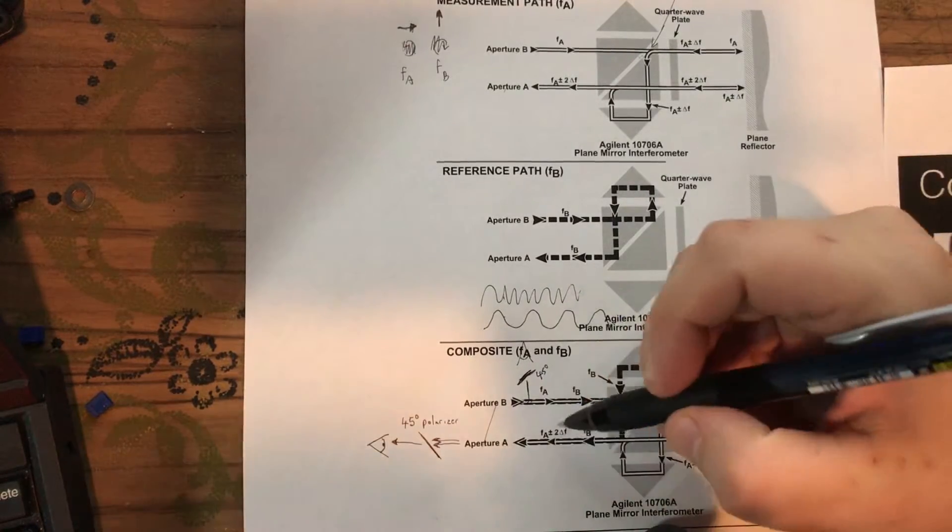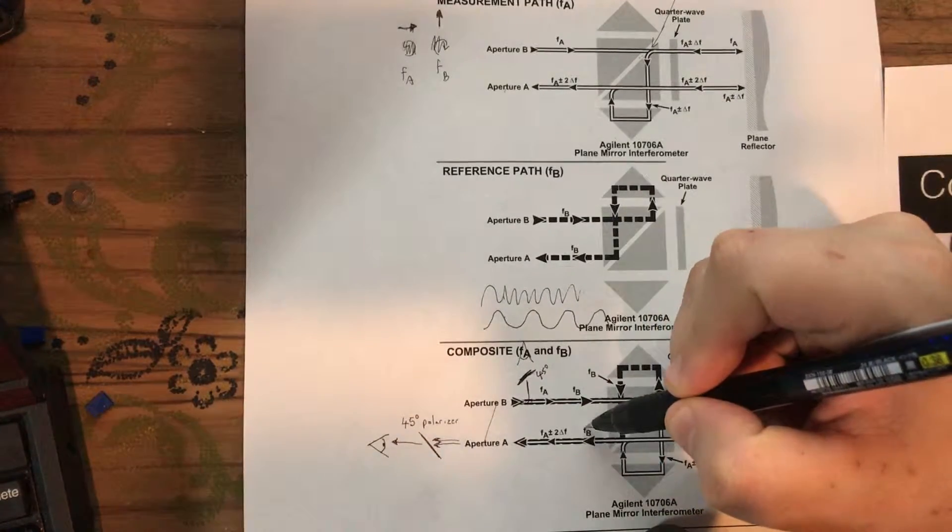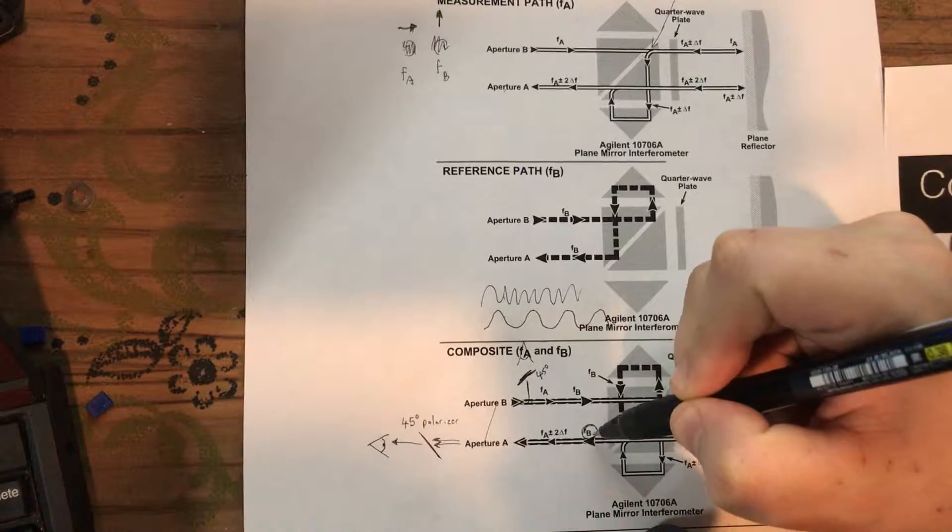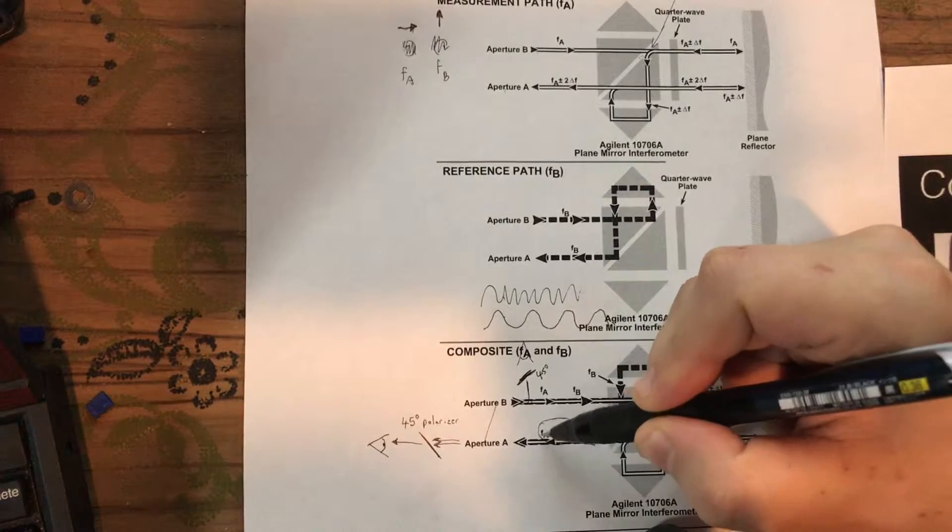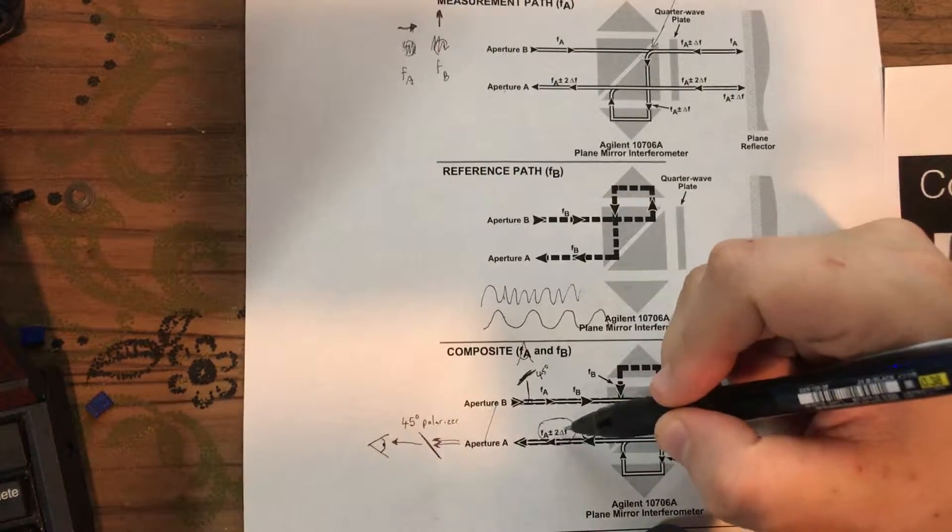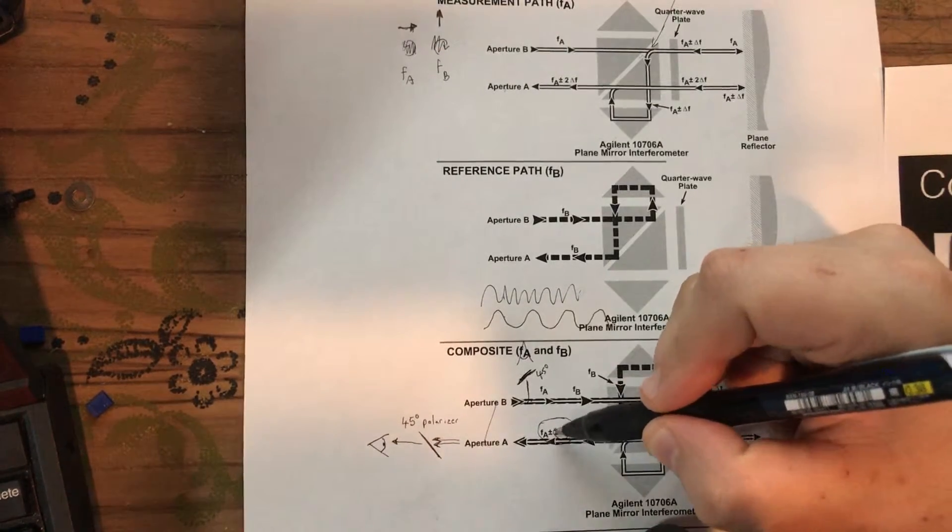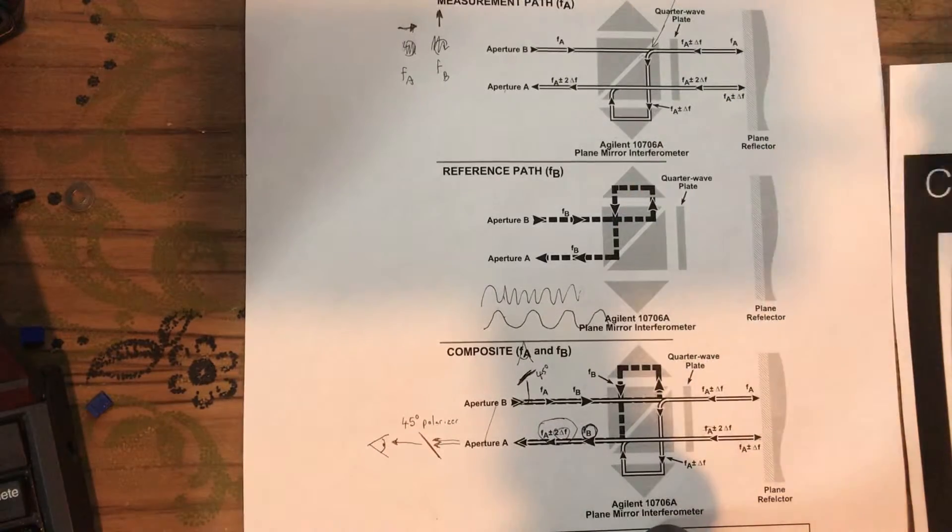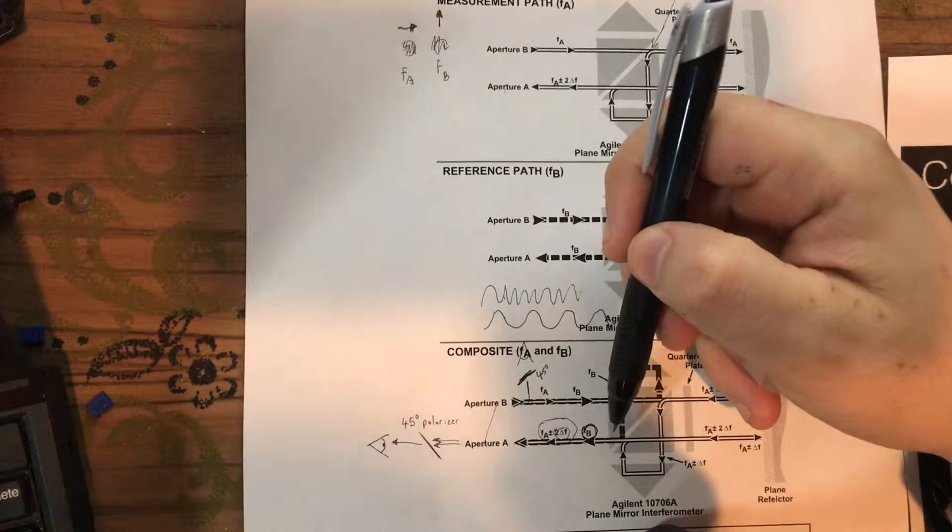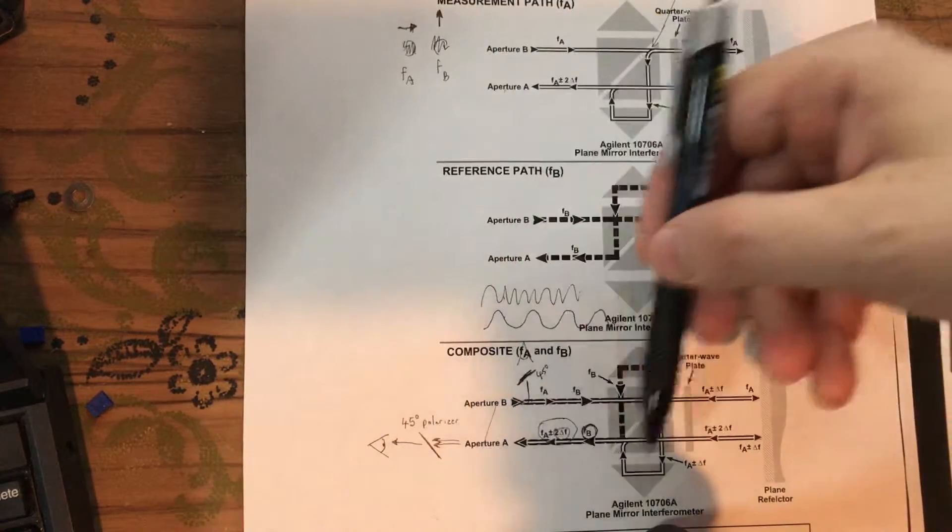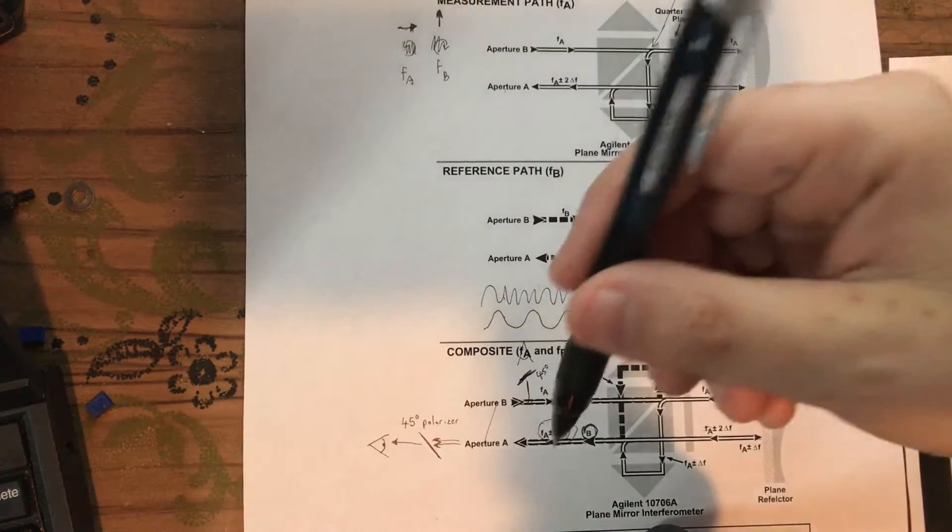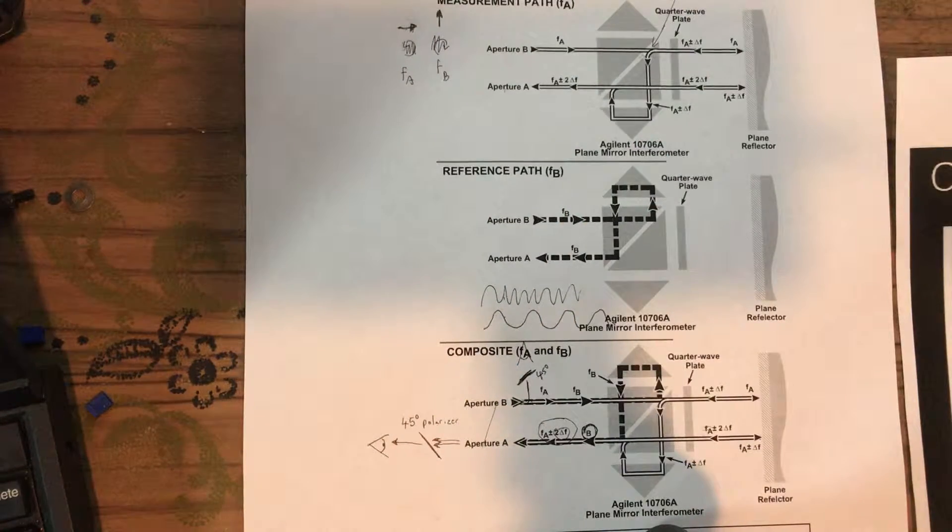In the end we get these two signals. We get the one that hasn't been doppler shifted, fb, and then the one that has been doppler shifted, which is fa plus two times the doppler shifted component of the signal. Those two frequencies are coming out. To calculate the difference, we can't measure those differences in frequency directly because that's such a small change.